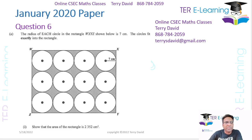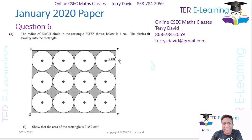In this paper, we have the radius of each circle in the rectangle WXYZ shown below is 7 cm. The circles fit exactly into the rectangle. Show that the area of the rectangle is 2352 cm squared.